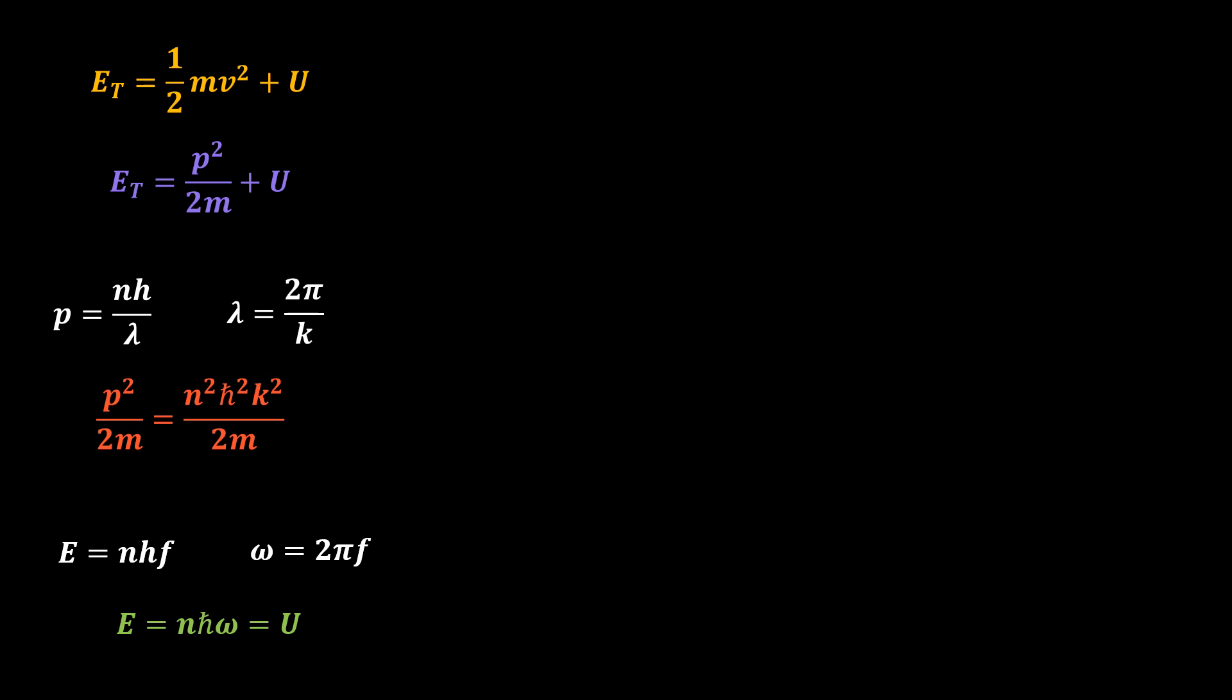Having the de Broglie equation and the Planck-Einstein equation, we can derive the Schrödinger equation. Total mechanical energy is given as the kinetic energy plus the potential energy, which can be written in terms of linear momentum as follows. You can use this and this to have p squared over 2m equal to this. Likewise, you can use this and this to get E equal to n h bar omega. And note that this is the potential energy. So, our equation becomes this.